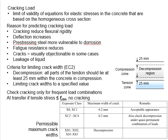Cracking load refers to the load where cracking occurs in the pre-stressed member. The cracking load sets the limits of the validity of the equations for the elastic stress developed in the concrete. These elastic stresses are calculated based on the homogeneous cross-section of the beam. Upon occurrence of the cracking load, the effective cross-section of the pre-stressed member is theoretically affected.